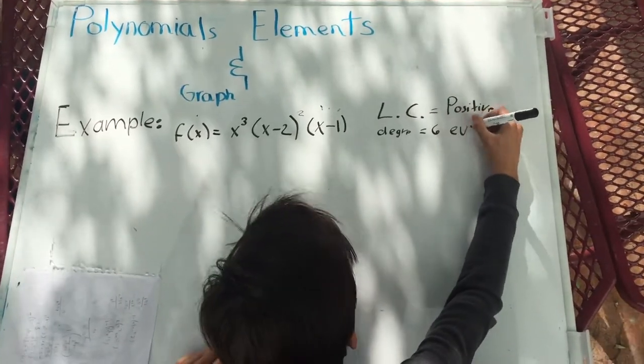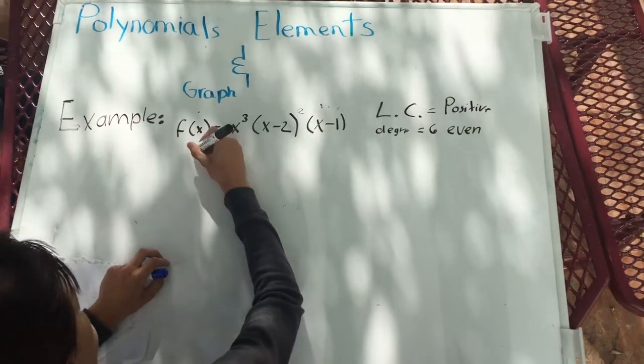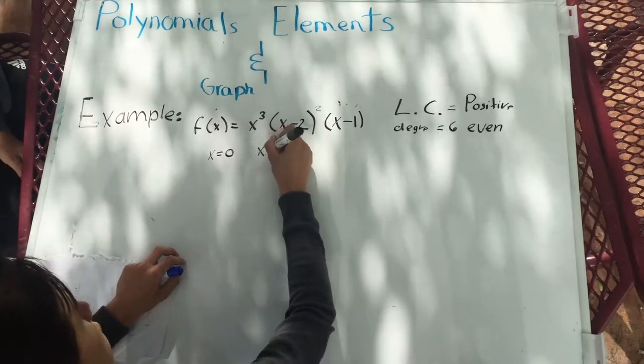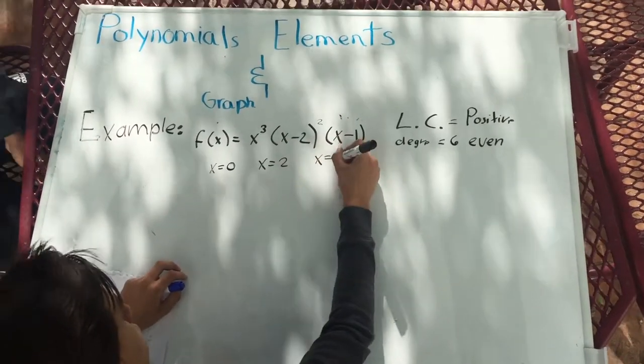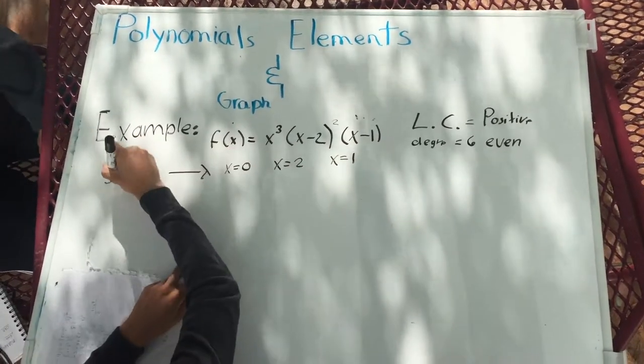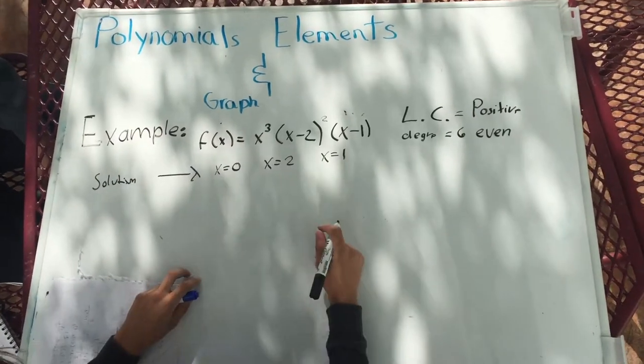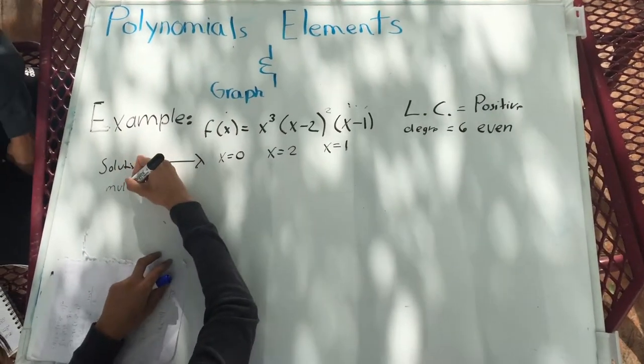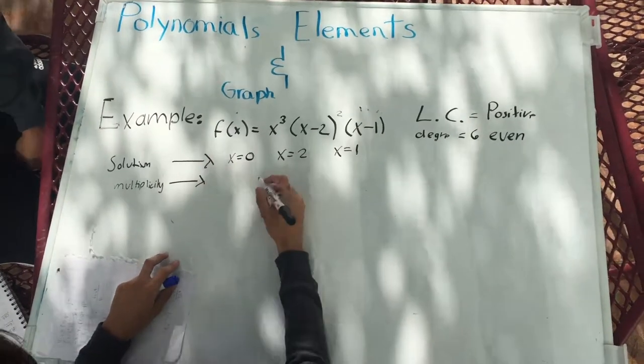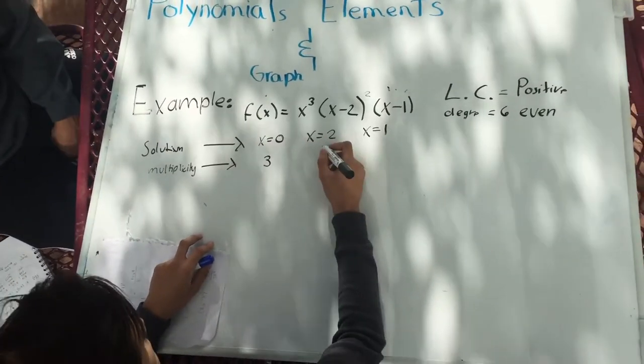The solutions are 0 for the first factor, 2 for the second factor, and 1 for the third factor. The multiplicity is the degree of each factor. In the first factor we have multiplicity of 3, in the second of 2, and in the third of 1.